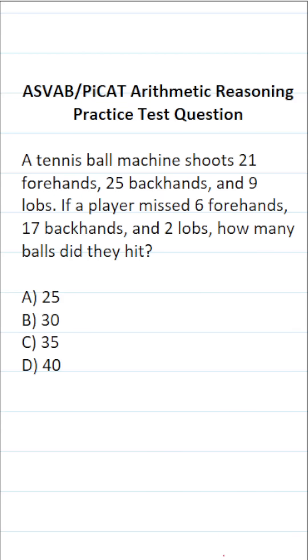So in order to solve this one, the first thing I want to do is calculate the total number of tennis balls the machine shot at the player. So it shot 21 forehands, 25 backhands, and 9 lobs. Let's add that all up. 9 and 5 is going to be 14, plus 1 is 15. Carry a 1. 2 and 2 is 4, plus 1 is 5. So in total, this tennis ball machine shot 55 tennis balls at the player.